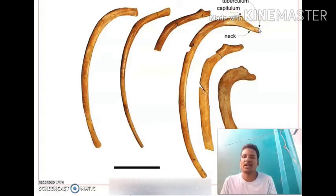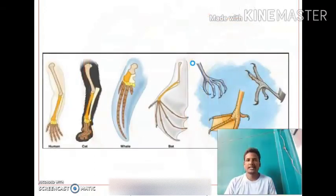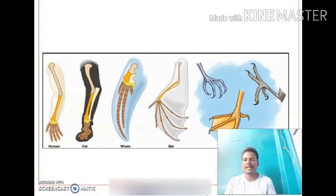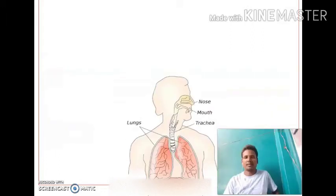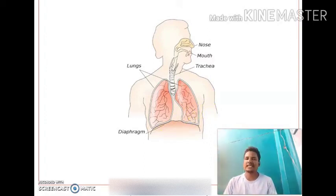Two pairs of pentadactyl limbs are present, with five digits each. The limbs are adapted for various types of life such as walking, running, swimming, burrowing, and climbing. A muscular diaphragm separates the thoracic and abdominal cavities.